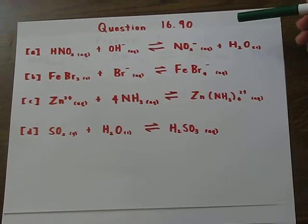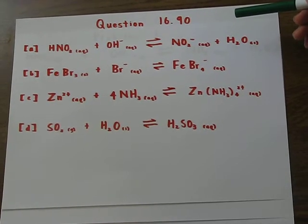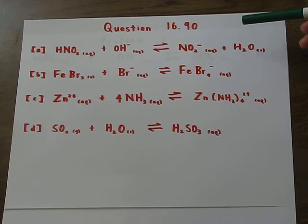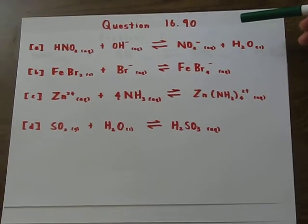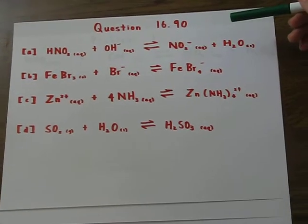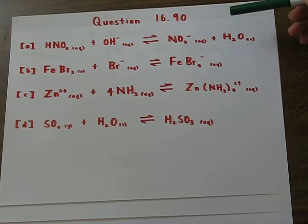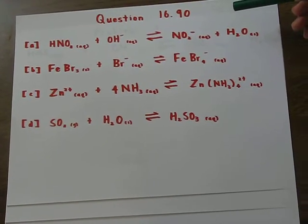Thus, to clarify, Lewis acids are simply electron pair acceptors, and Lewis bases are electron pair donors. Also, just as a side note, in order to identify Lewis acids and bases, you must be able to draw Lewis structures, because you must visually identify the acid and base species in certain cases. So, if you need to go back to chapters 8 and 9 and brush up, do so.